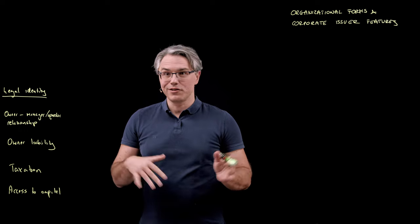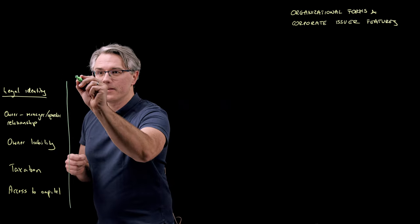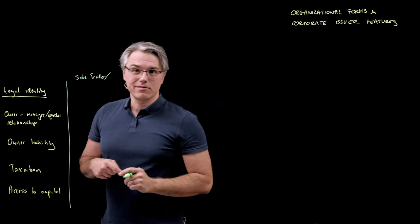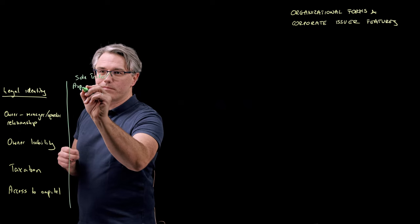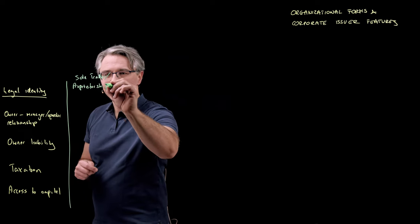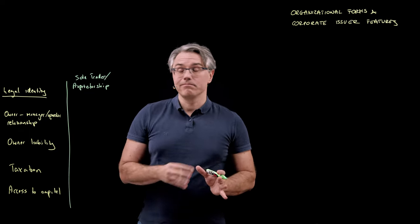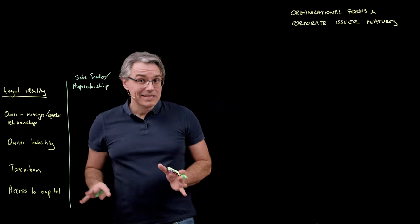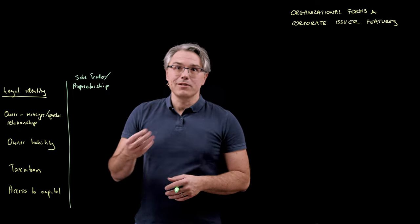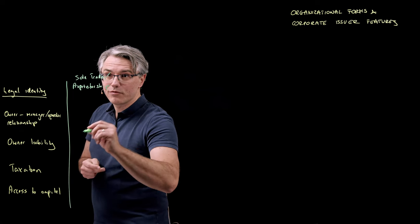The most basic organizational form is the sole trader, also called sole proprietorship - an individual conducting business. In this case, the business and owner are not separate: the owner is the business and the business is the owner. The business is an extension of the owner and has no separate legal identity.